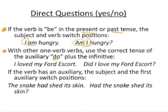With other one-word verbs — verbs that don't have an auxiliary — use the correct tense of the auxiliary 'do' plus the infinitive. For example: 'I loved my Ford Escort' becomes 'Did I love my Ford Escort?' I had a one-word verb 'loved,' so I use the auxiliary 'do' conjugated in the same tense — past tense — giving me 'did.' The subject 'I' and the direct object 'Ford Escort' stay the same.